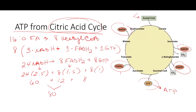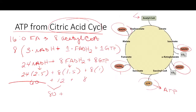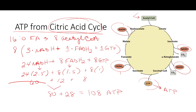Taking into account the ATP from the citric acid cycle, which is 80, plus the ATP from beta oxidation, which is 28, we get a total of 108 molecules of ATP. But that's not our net ATP — remember we have to spend ATP to make ATP. For an even-chain fat we burned two equivalents of ATP at the beginning, so we subtract 2 to get a net yield of 106 molecules of ATP from 16:0 palmitate.